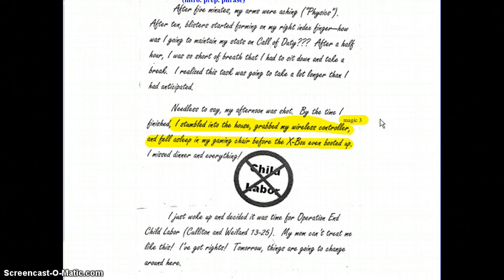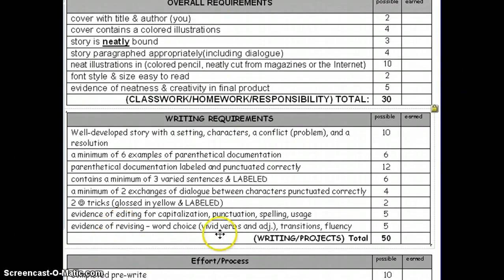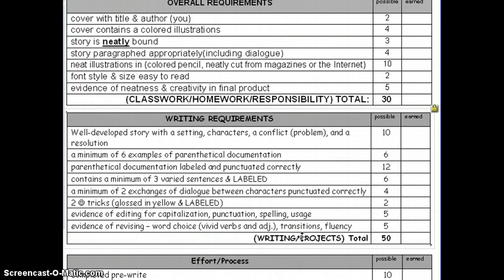Students have a page of smiley face tricks in the writing section of their binder, and we've required these throughout all writing assignments this year. This is just an example of what it should look like in their storybook. There also needs to be evidence of editing — capitals, punctuation, spelling, and grammar usage correctly — and that they've gone back and looked at word choice. We talked about the dead words like good, nice, bad, and said — I don't want to see any of those in their writing. There should be more description. We've also talked about transitions, so that it's not choppy and all sentences don't start with 'I' or the character's name.